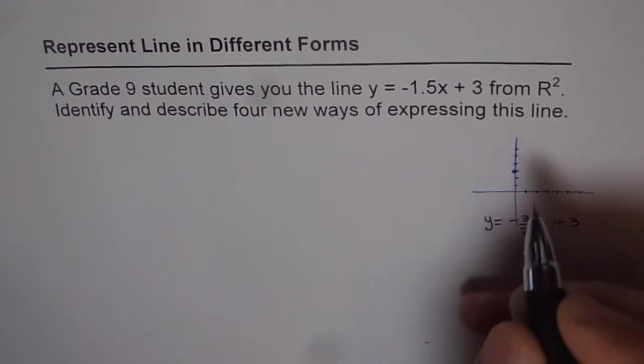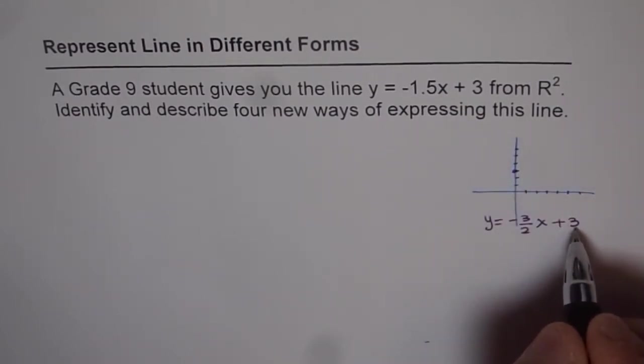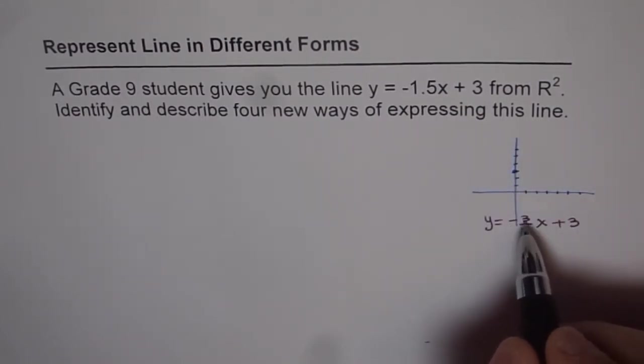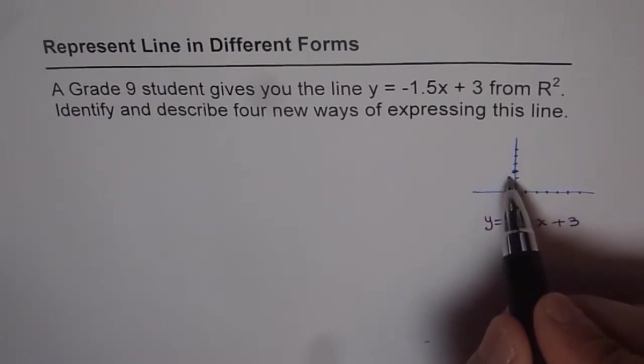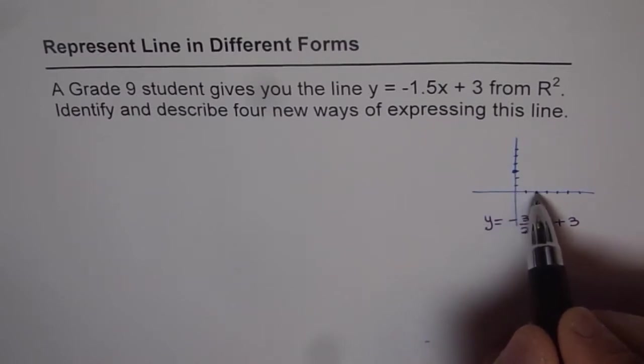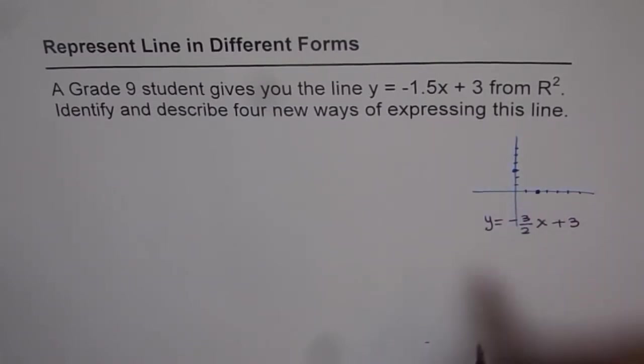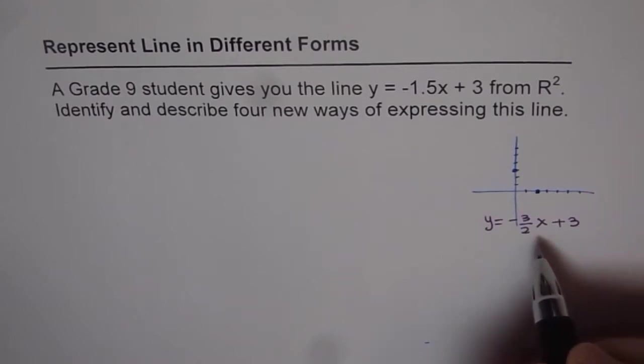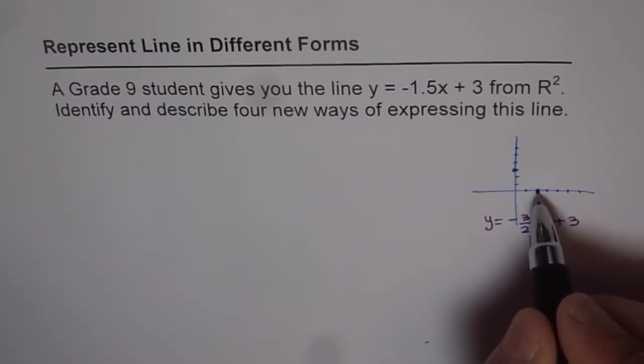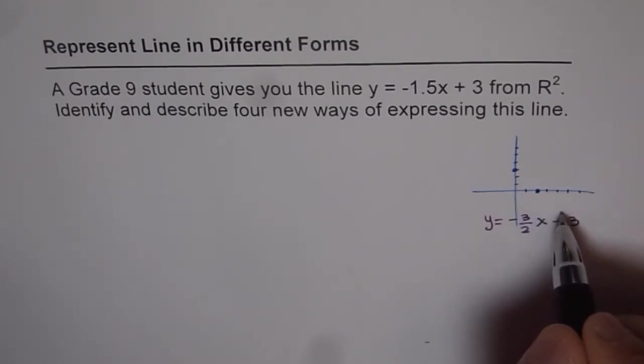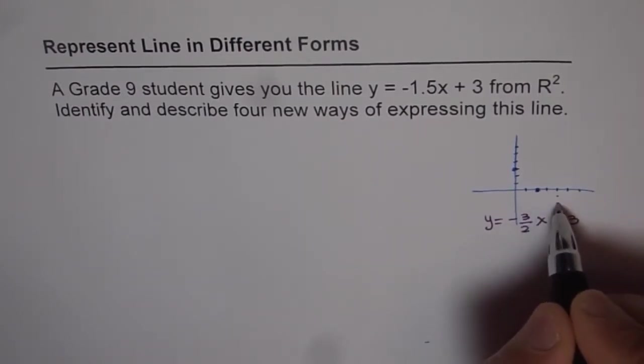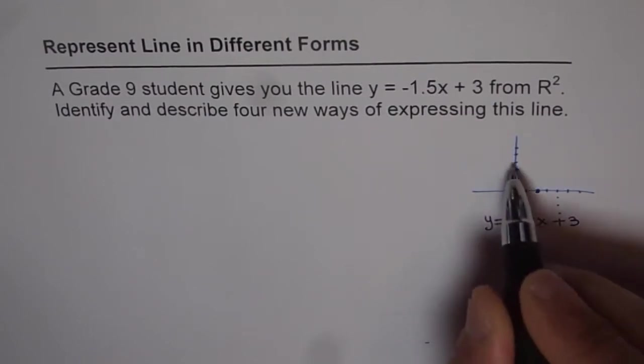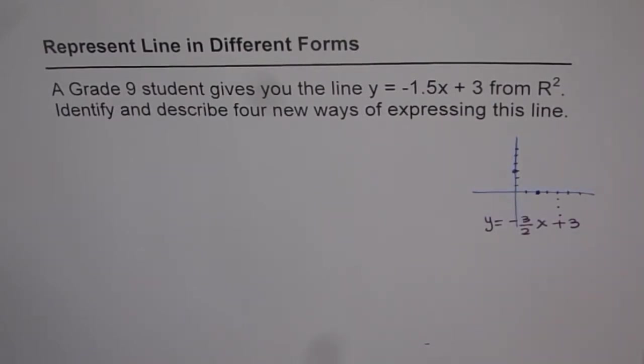The method which we have learned is: first point is the y-intercept. And then we go -3 down and 2 right to get the next point. So we get 1, 2, 3 down and 2 right. To get the next point, we could either go 2 to the right and then 3 down. 1, 2 and then 1, 2, 3. If I join these 3 points, I get the required line.